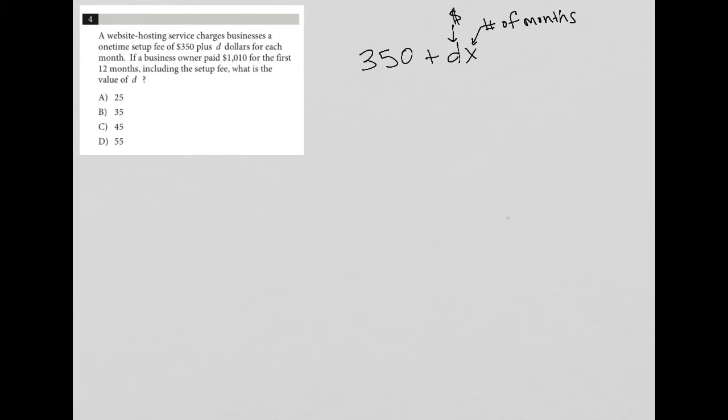If a business owner paid $1,010 for the first 12 months, so that means x is 12, and the business owner pays $1,010. So that means that's going to be equal to the $350 for the one-time fee plus 12 times D dollars for each month, including the setup fee.